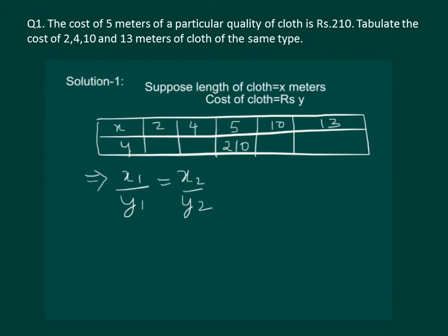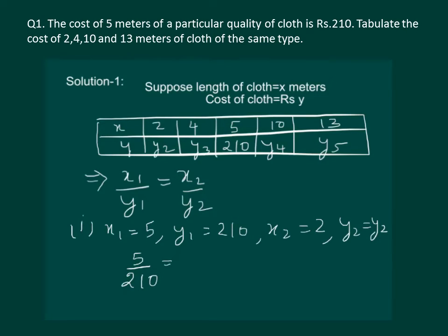Let us consider 5 as x1 and 210 as y1 and give the notations y2, y3, y4 and y5 to the corresponding values of y. Let us start by solving to find the value of y2. We have x1 is equal to 5, y1 is equal to 210, x2 is equal to 2 and y2 we have to find out. So let us substitute in our formula we get 5 by 210 is equal to 2 by y2.